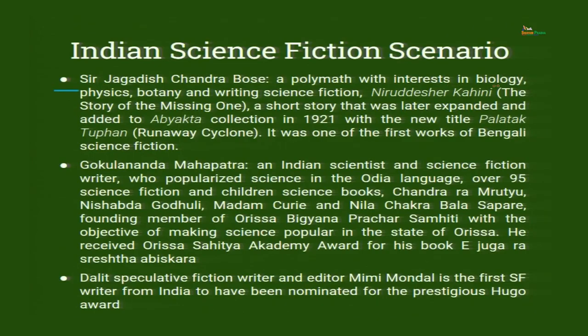A polymath — polymath means he had expertise in many different subjects: physics, science, chemistry, biology, literature. He had that kind of grasp on every subject. A polymath with interests in biology, physics, botany and writing science fiction. He also wrote science fiction. Niruddeshir Kahini, The Story of the Missing One, a short story that was later expanded and added to the Abhyakta collection in 1921 with the new title Palatak Tufan, Runaway Cyclone. It was one of the first works of Bengali science fiction. Whatever is written in Bangla is called Bengali.